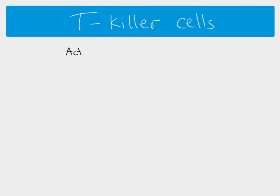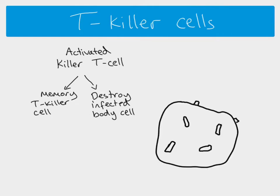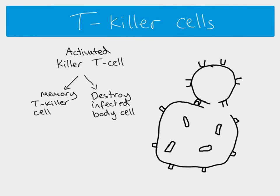T killer cells, once activated, are also triggered to divide by mitosis. Some of them become memory T killer cells, while many go on to destroy infected body cells. The activated T killer cell binds onto an antigen presenting cell - either the same one that activated it, or another infected body cell. The T killer cell contains vesicles with toxins, and when it binds, the cell surface membrane of the infected cell and the T killer cell come into direct contact with one another.